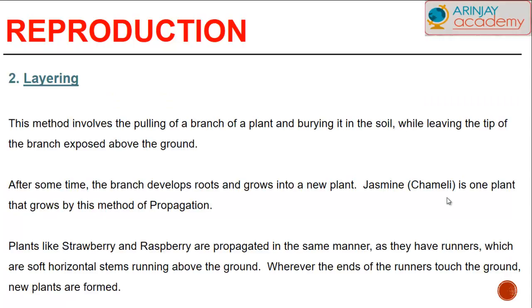In layering, it involves pulling a branch of a plant and burying it in the soil while leaving the tip of the branch exposed above the ground. After some time the branch develops roots and grows into a plant. Jasmine, locally known as chamele, is one plant that grows by this method. Other plants like strawberry and raspberry are propagated in the same manner as they have runners, which are soft horizontal stems running above the ground. Whenever the ends of these runners touch the ground, new plants are formed.